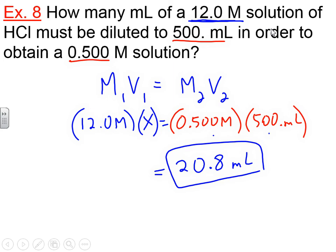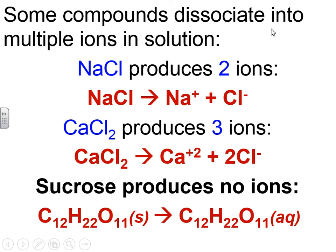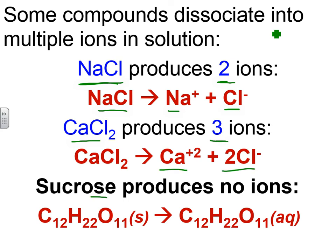Feel free to use this dilution equation whenever you have a dilution problem. The last thing we'll talk about is that some compounds produce multiple ions in solution, especially salts or ionic compounds. Sodium chloride, composed of two ions, gives you twice as many ions in solution as you put in. Calcium chloride dissociates into three ions — a calcium and two chloride ions. Sucrose, which is not ionic, does not dissociate at all. So if you have 3 molar NaCl, you get 6 molar ions; 3 molar CaCl₂ gives you 9 molar ions.